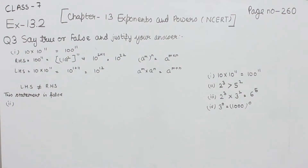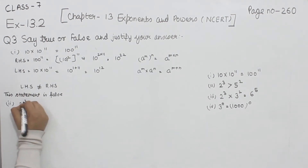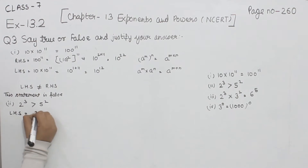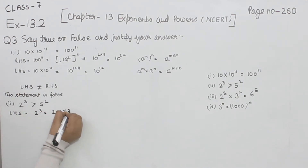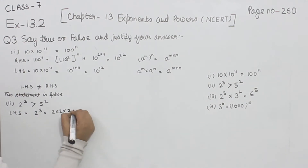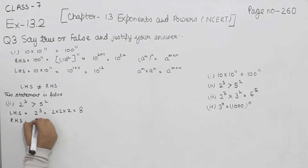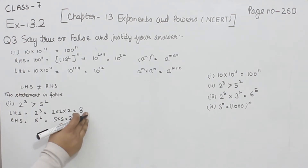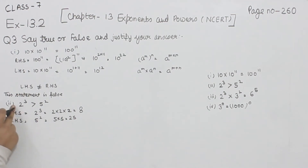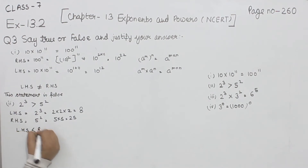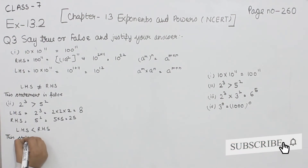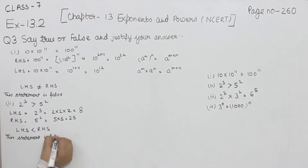Now part 2: we have 2 to the power 3 is greater than 5 to the power 2. For the left hand side, 2 to the power 3 means 2 multiplied by itself 3 times: 2×2=4, 4×2=8. For the right hand side, 5 to the power 2 means 5×5=25. Since 8 is smaller than 25, the left hand side is smaller and the right hand side is bigger. So this statement is false.